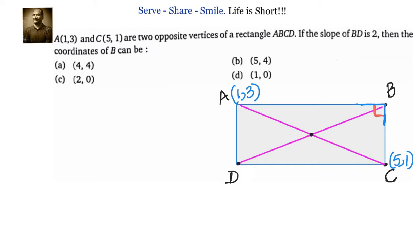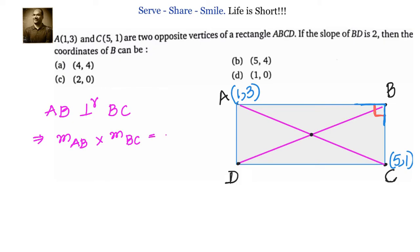The second hint is that we have been given the slope of BD is 2. If we can get the equation of BD, we have another condition in terms of X1 and Y1. To get the equation of BD, we know the slope of BD, and we can get a point on BD because the midpoint of AC equals the midpoint of BD. Find the midpoint of AC, equate it to the midpoint of BD, apply point-slope form, and get the equation of BD. With two equations in X1 and Y1, solve them to get the coordinates of B.